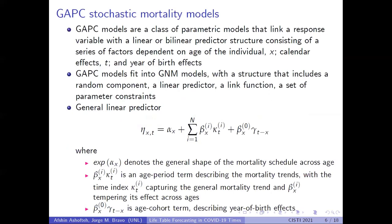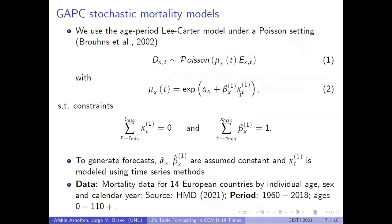Generalized age-period-cohort stochastic mortality models are a general family of models that combine a random component, a linear predictor, a link function, and a set of parameter constraints. The general linear predictor includes age-specific parameters alpha_x and beta_x, time-trend-specific parameter k_t, and cohort or year-of-birth effects captured by the gamma coefficient. For this paper, we use the Lee-Carter specification, which has a simple combination of age-specific and period effects — an age-period model with no cohort effects.